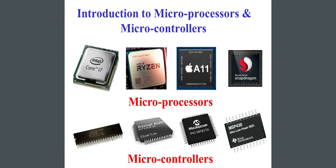Introduction to microprocessors and microcontrollers. There are some figures or pictures of microprocessors above and microcontrollers at the bottom. Microprocessors shown include Intel Core i7, AMD Ryzen, Apple A11, and Qualcomm Snapdragon. Microcontrollers shown include Atmel AVR, Microchip, and ultra low-power MCU examples.